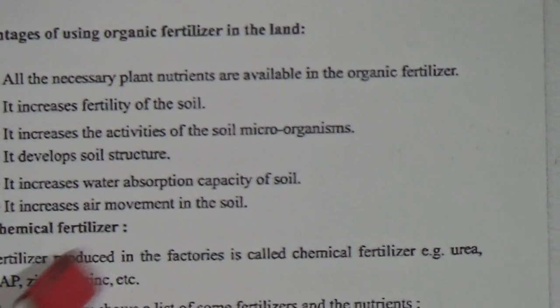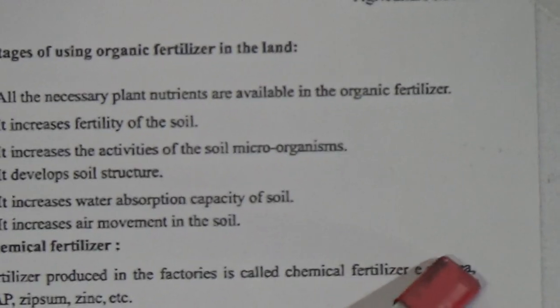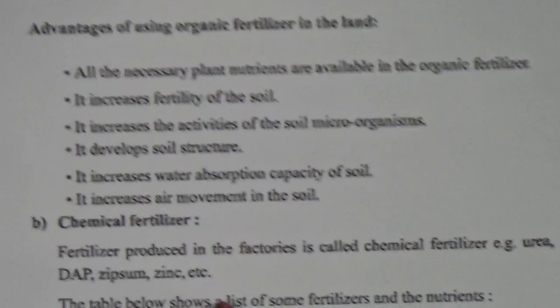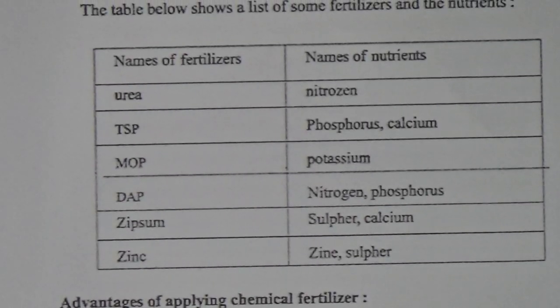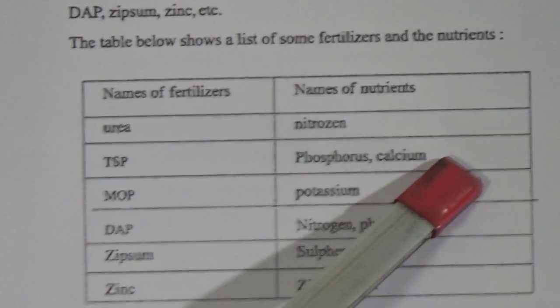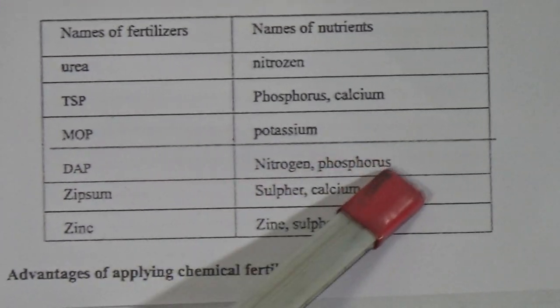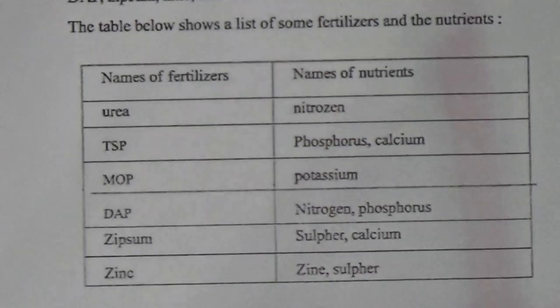Chemical fertilizer: fertilizer produced in factories is called chemical fertilizer — for example, urea, DAP, gypsum, zinc, etc. The table below shows a list of fertilizers and the nutrients they contain. Urea contains nitrogen. TSP contains phosphorus and calcium. MOP contains potassium. DAP contains nitrogen and phosphorus. Gypsum contains sulfur and calcium. Zinc fertilizer contains zinc and sulfur.